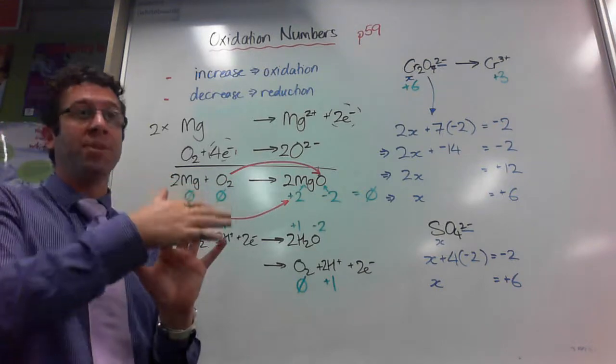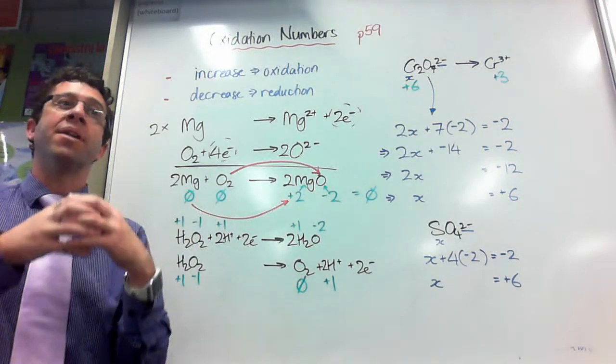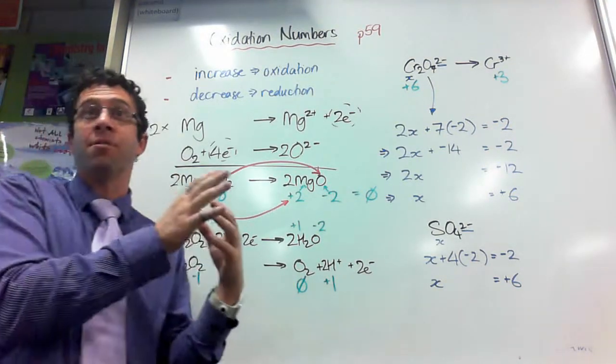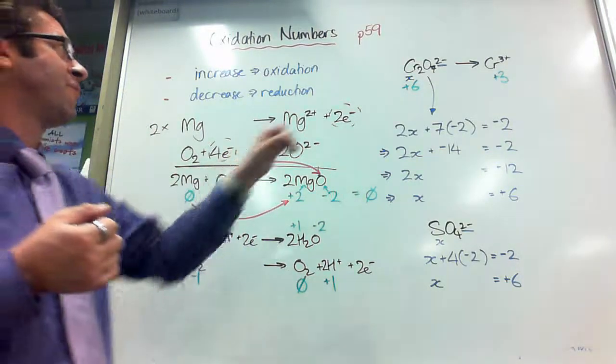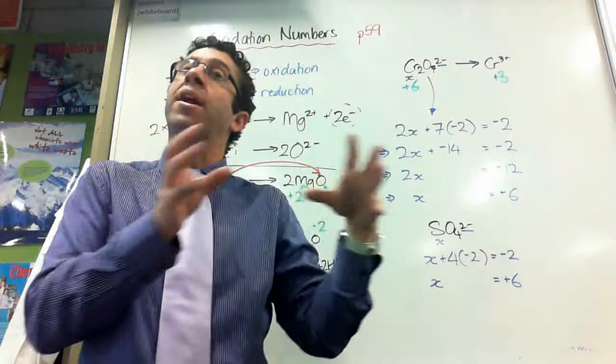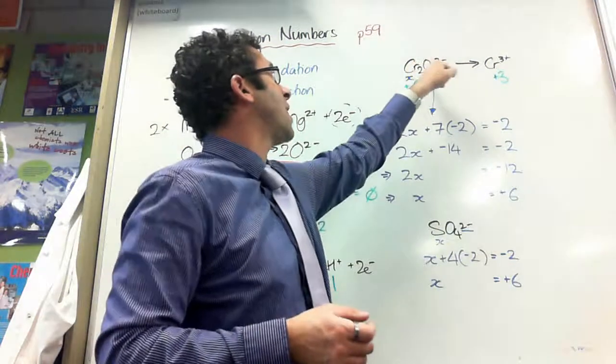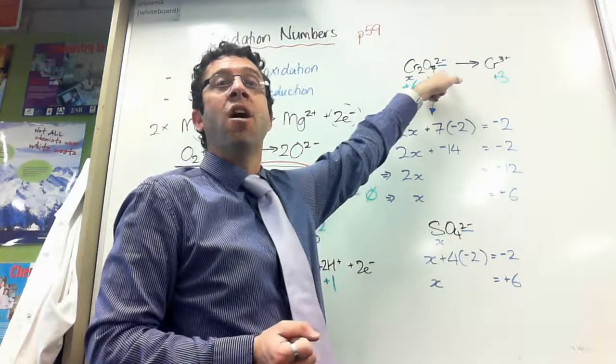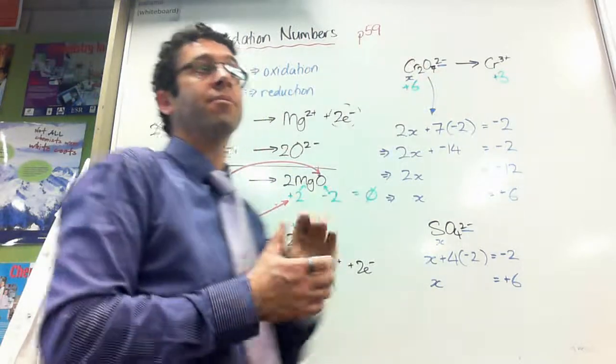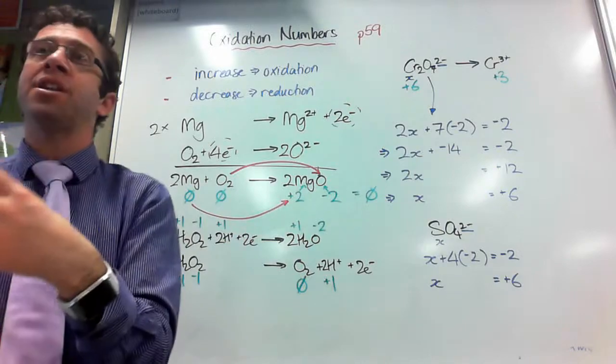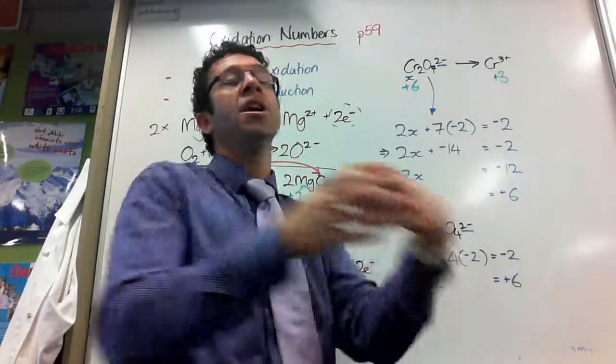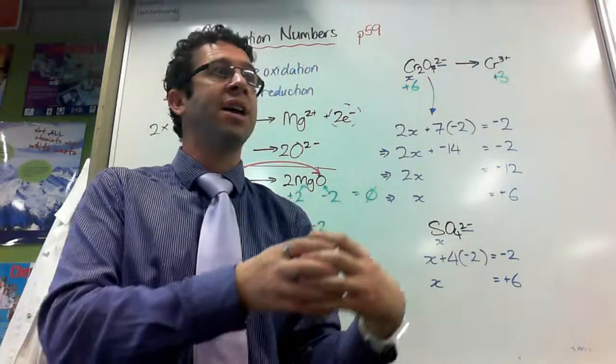The sum of oxidation numbers in a compound must be zero. So, they all add up to zero. And rule number six is, if you have a polyatomic ion, more than one atom in an ion, the sum of their oxidation numbers must add up to the ion's charge. And if you can get here on those rules, you can now use oxidation numbers and electron transfer to justify that something is oxidation or reduction.